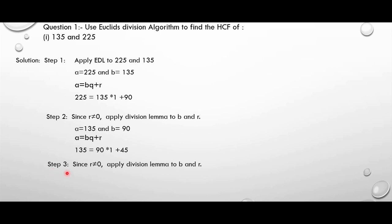Now a becomes 90 and b becomes 45. Again apply the formula a equal to bq plus r. On substituting the values, we get 90 equal to 45 into 2 plus 0. The remainder has become 0. Since the divisor at this stage is 45, we need to consider 45 as the HCF of 135 and 225.